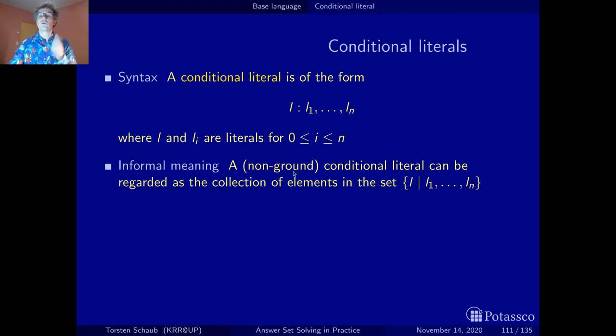And think of them as non-ground because then such a conditional literal can be regarded as simply the collection of elements L such that the other conditions L1 to Ln hold. And this shows a little bit that in the end of the day only the Ls will survive while the L1 to Ln are only used to select the Ls. They are the conditions, right?